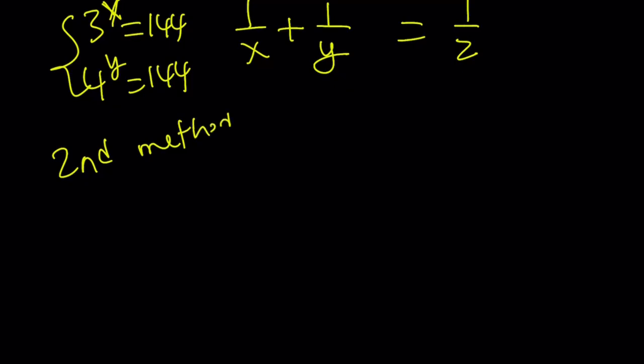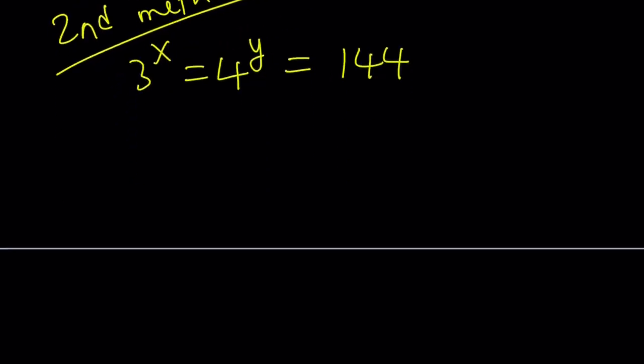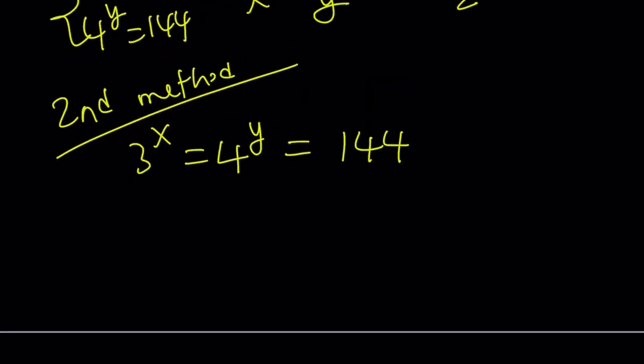So second method uses, obviously, a smarter approach because that's almost always the case, right? When I do the second method, it's going to be less painful. So now, what can I do here? First of all, notice that 144 is 12 times 12. So can I take advantage of that fact in a different way without using logs? We can do it.